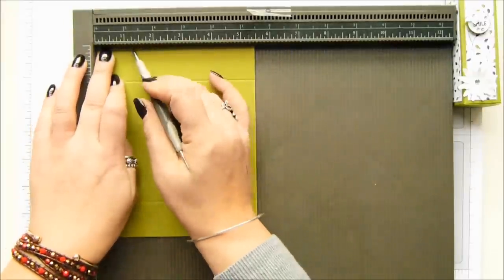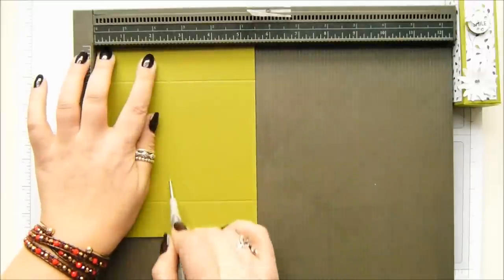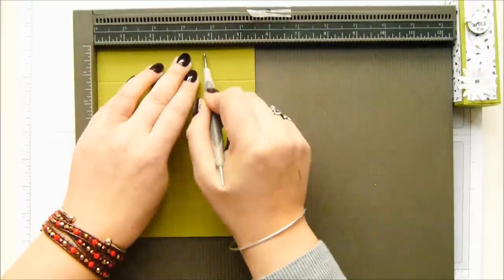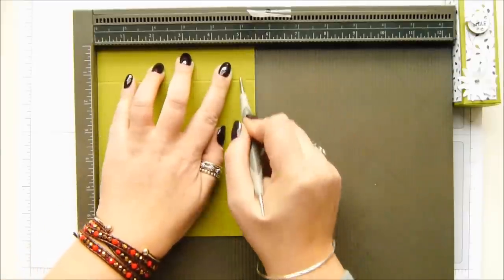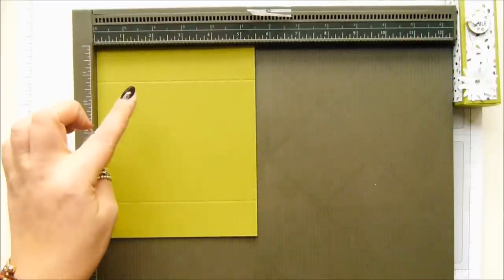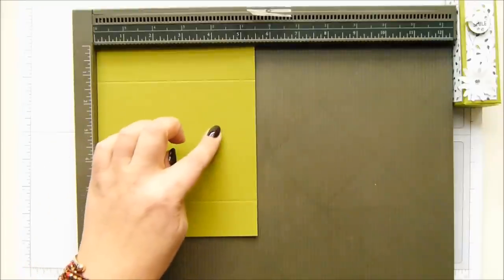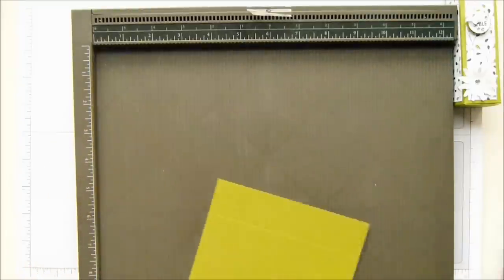On the short side, score it at one and a quarter, two and a half, three and three quarters, and five inches, which in metric is 3.2, 6.4, 9.6, and 12.8. Oh good grief.